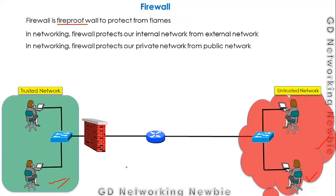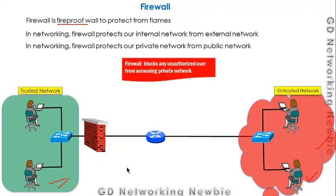But what exactly do we want protection from? If traffic is coming from the untrusted network to the trusted network, we want the firewall to block any unauthorized user from accessing the private network.